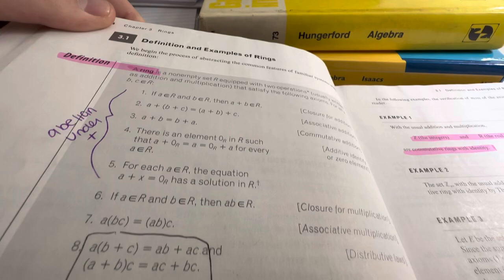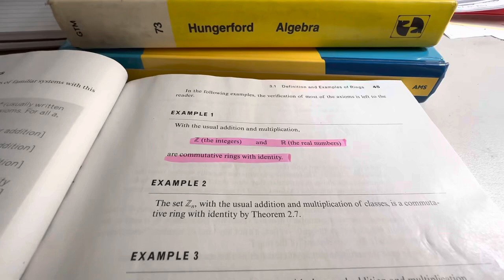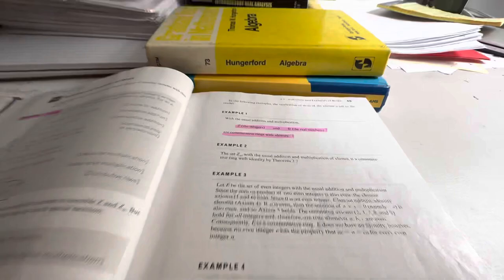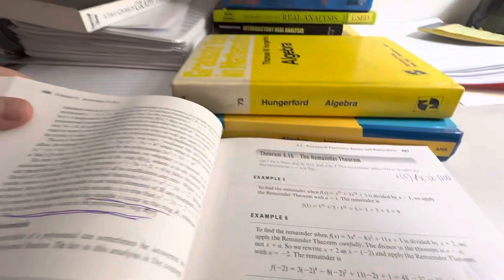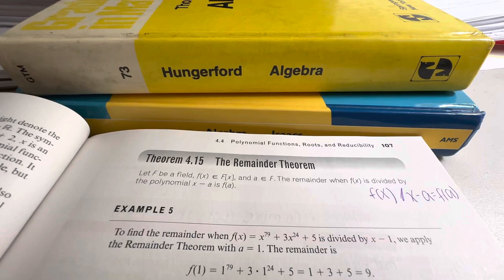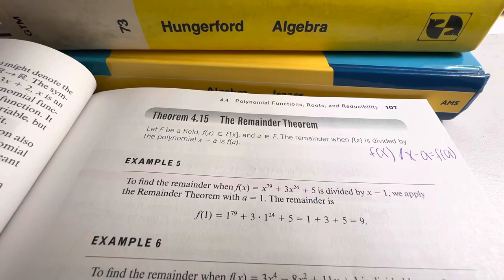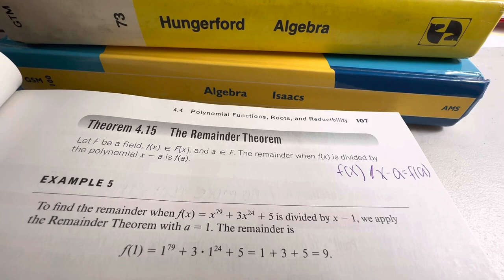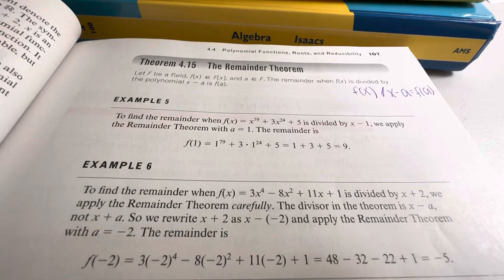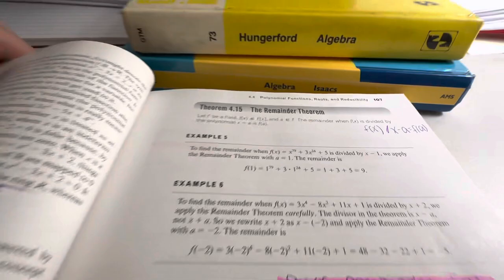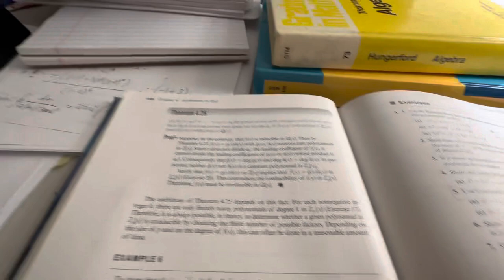Abelian under addition. Definition example of rings. Z, the integers, and R, the reals, are commutative rings. The remainder theorem. F is a field. F(x) is in big F[x]. A is in F. The remainder, when F(x) is divided by the polynomial x minus A, is F(A). Yeah, I knew that. What am I saying? I knew that. Stupid brain. Always tripping me up with the basic facts. You do too much analysis and this is what happens. This is your brain on analysis. This is your brain on algebra. Still think drugs are cool?